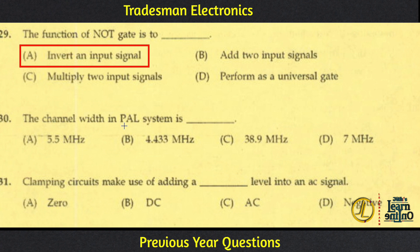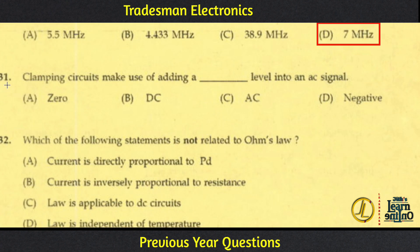The PAL system is a video format standard used in TV. The PAL system operates at 7 MHz channel bandwidth. NTSC is another video format standard. The PAL system is phase alternating line.